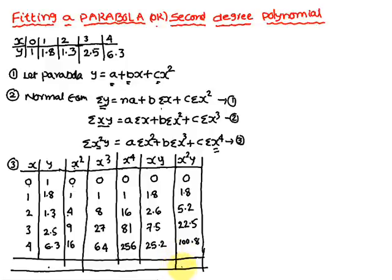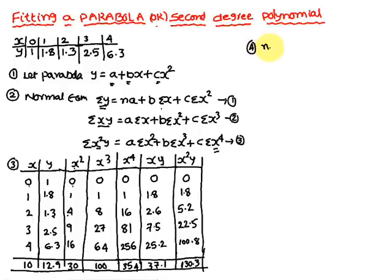Summing the columns: Σx²y = 130.3, Σxy = 37.1, Σx⁴ = 354, Σx³ = 100, Σx² = 30, Σy = 12.9, Σx = 10. The number of data sets n = 5.